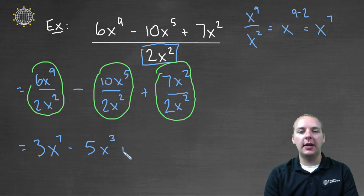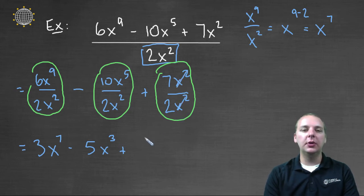And then lastly, we'd have seven x squared over two x squared, well the x squareds will cancel. Now seven over two doesn't really reduce to a whole number, but that's okay, it doesn't have to. We'll have seven halves as just a constant term. So here we've taken a large polynomial divided by a single monomial.